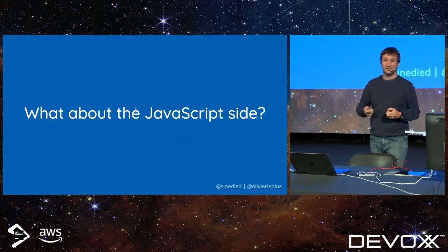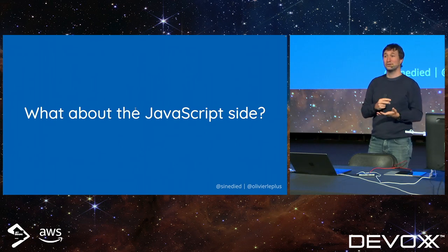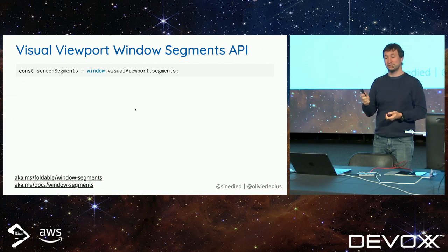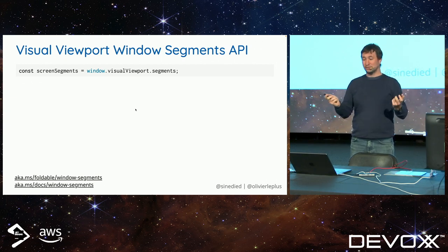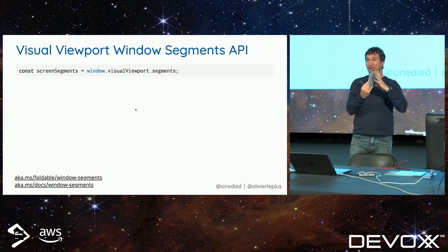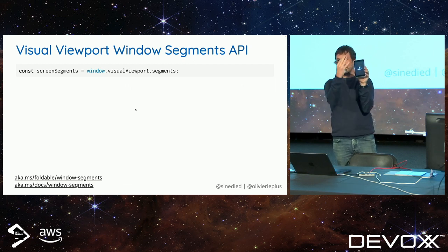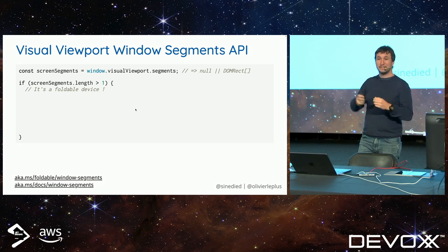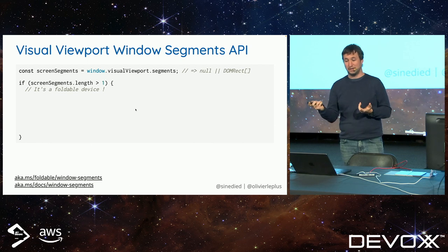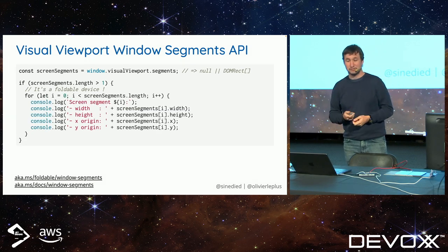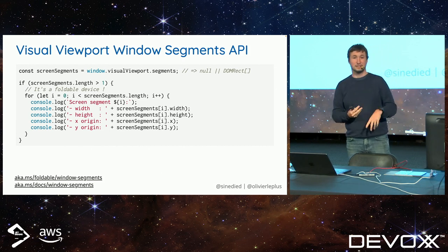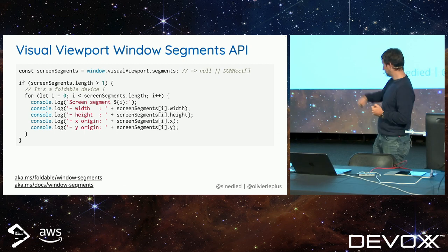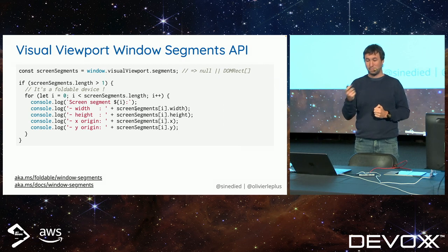That's for CSS. But sometimes you may want to manipulate your DOM using JavaScript. There's an API for that: on the viewport object in `window.viewport`, there's now the segment object. If you just have one screen — like a normal smartphone — it returns null. But if there is more than one viewport, you get an array of DOM rects sent back to you, and then you can iterate. For each one, you can access the width, height, top, bottom, and so on. We'll share the slides after on Twitter.